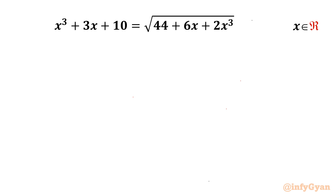Welcome back to InfiGyan friends. Today in this video we are going to take up one very interesting radical equation problem. It is x³ + 3x + 10 = √(44 + 6x + 2x³). We have to find out all real solutions.